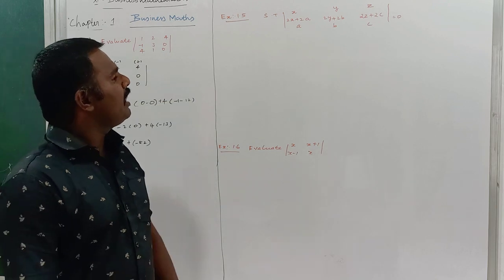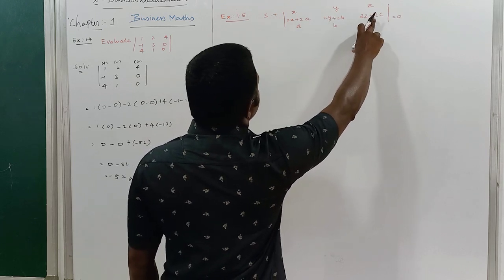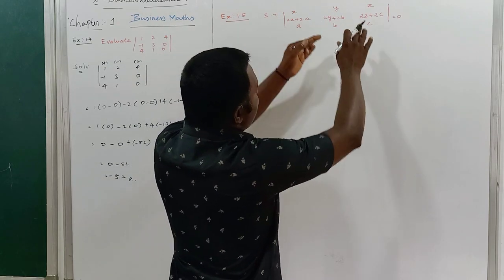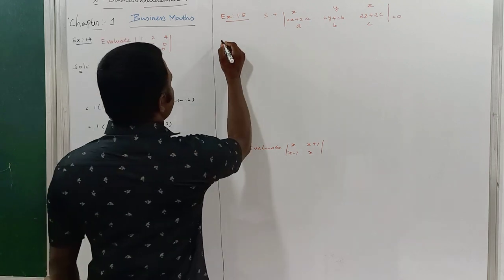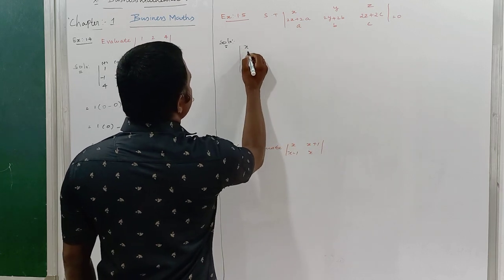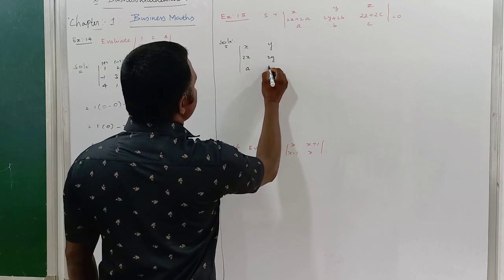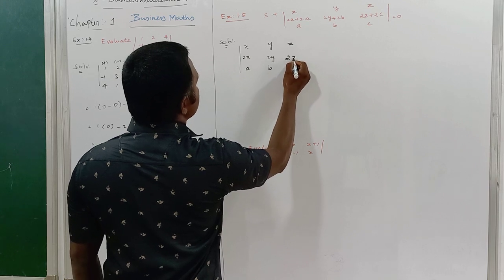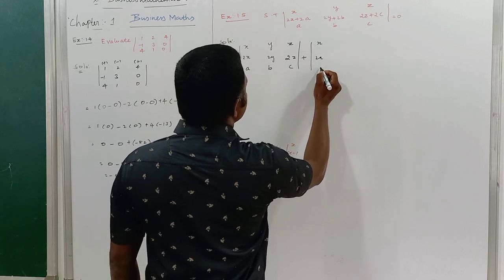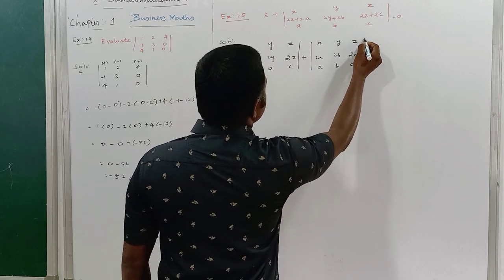Show that: x, y, z, 2x, 2a, 2y, 2b, 2z plus 2c, a, b, c — it is equal to 0. So we just find out that the value of the determinants is going to be 0. First I will write down the solution. I have one simple idea: I want to split these two determinants. So: x, 2x, a and y, 2y, and b, z, 2z, and c, plus x, 2a, a, y, 2b, b, z, 2c, and c.